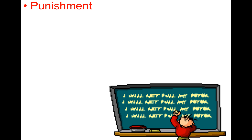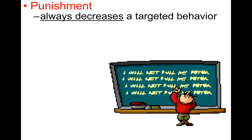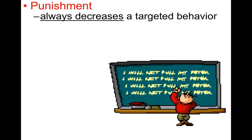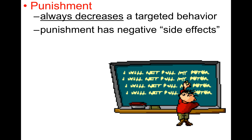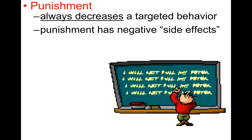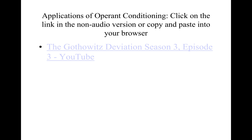Punishment is the only outcome that always decreases the targeted behavior. It does tend to have very negative side effects — it's often administered when people are angry — so punishment is not as effective as other means, like using positive reinforcement to strengthen behavior.